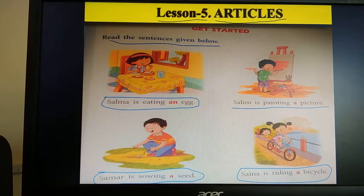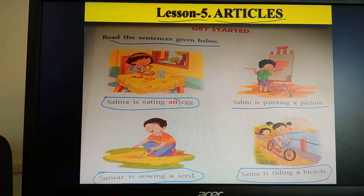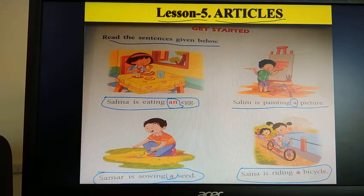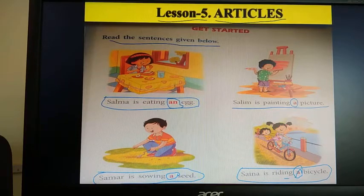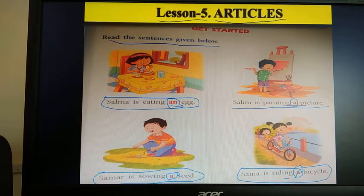Dear children, you are able to notice, I hope, there is a word or a letter here. An egg. Second sentence: a picture. Third sentence: a seed. And fourth sentence: a bicycle. So these words are called articles — an, a, a, and a. These are called articles.